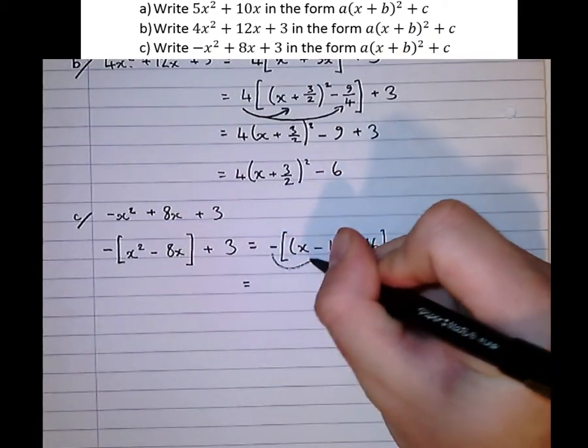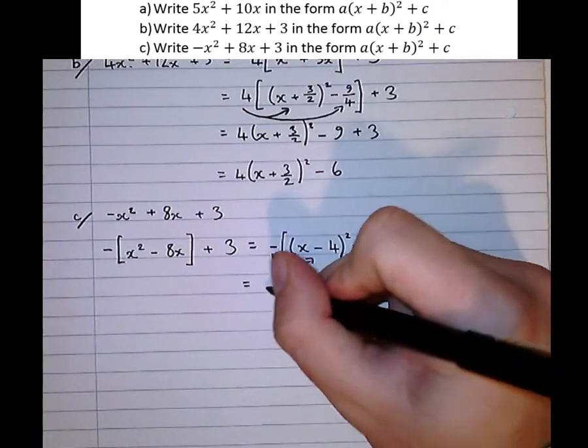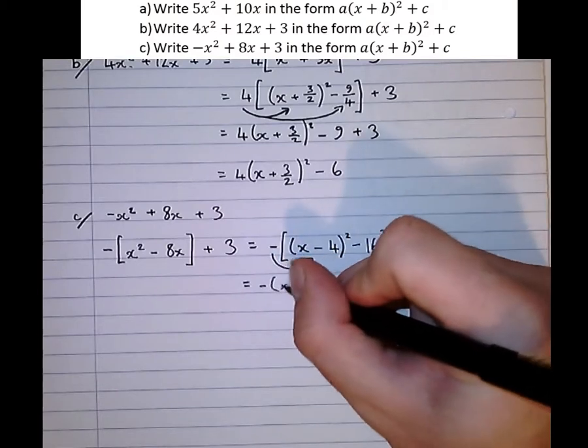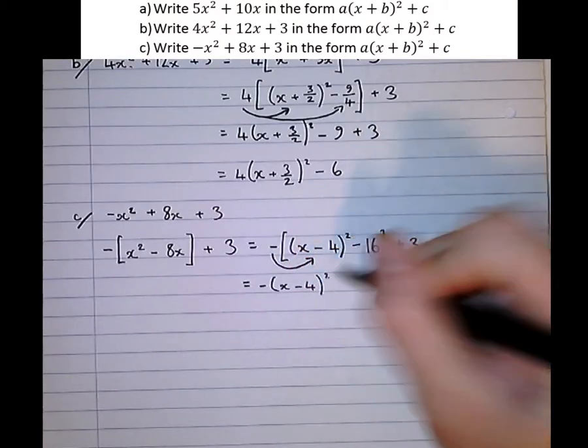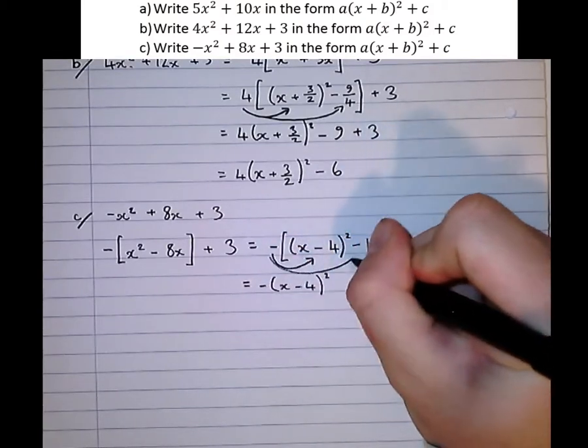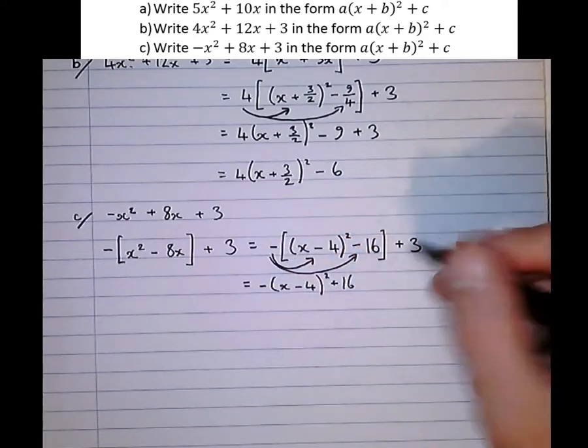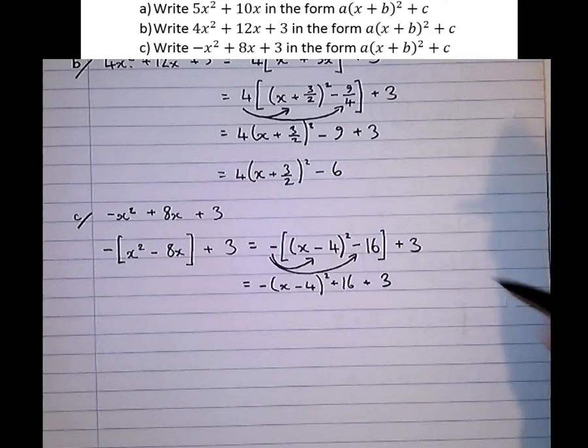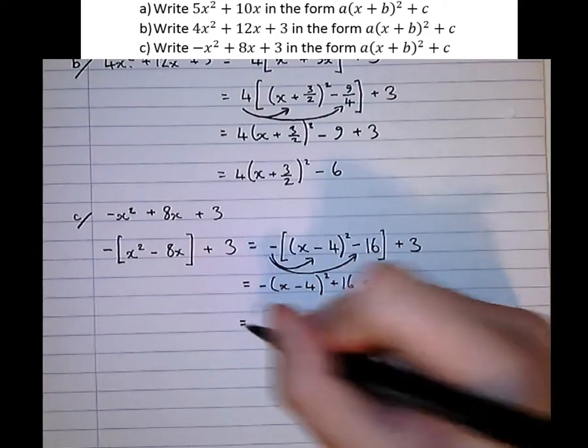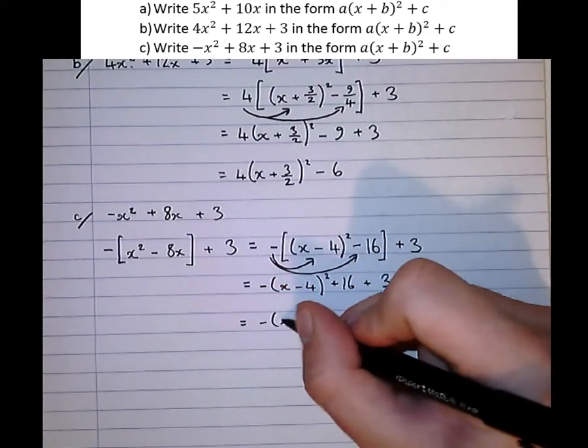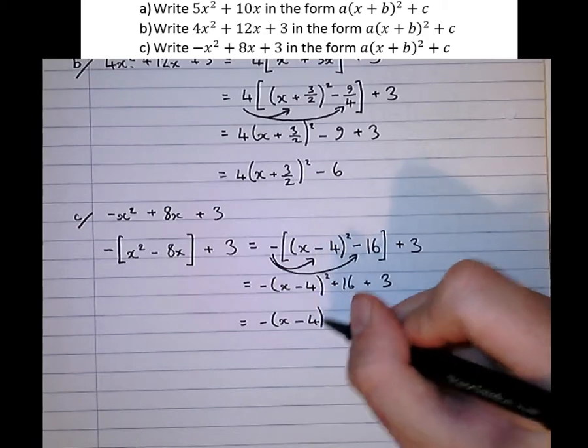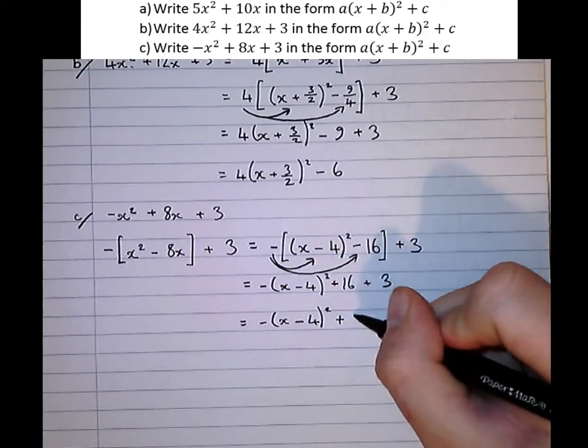Equals, multiplying the square brackets out, we get minus x minus 4 squared, minus minus 16, plus 16, plus 3. And then, simplify, minus x minus 4 squared plus 19.